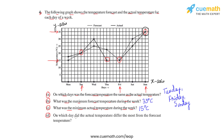Question D asks for the day when the actual temperature differed the most from the forecast temperature. Observing the differences: on the first day the difference is one unit; on the second day they are the same; on the third day the difference is two units; on the fourth day the difference is four units; on the fifth day they are the same; on the sixth day the difference is two units; and on the seventh day they are the same again. The maximum difference of four units occurs on Thursday, making Thursday the answer.